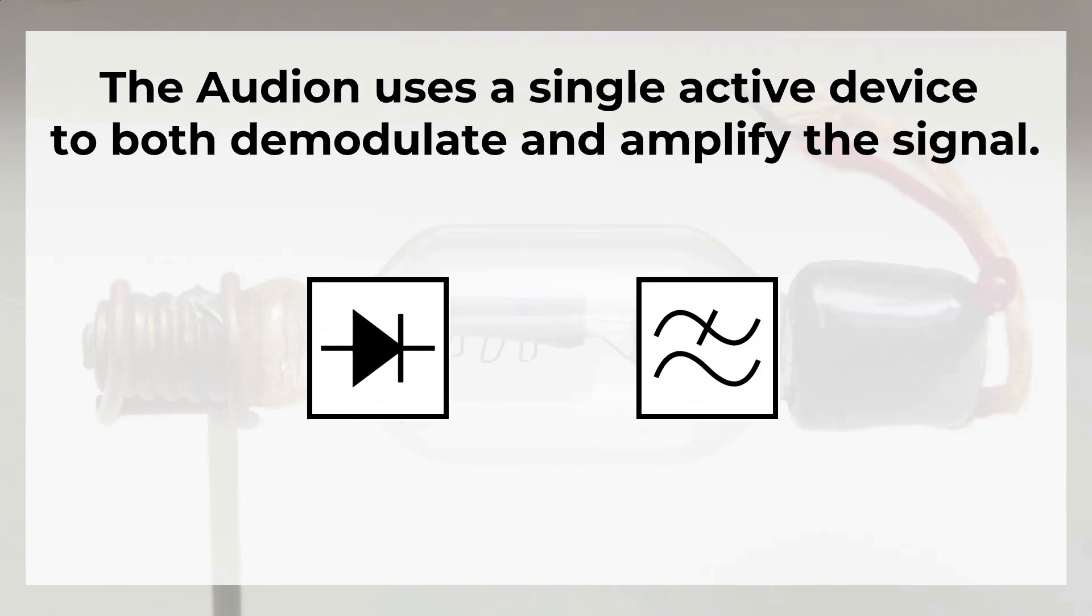Before we explain what an Audion is, let's first take a look at a simple diode detector. The input signal is an AM signal. If the input level is high enough, the diode can rectify the signal. After the low-pass filter we get the modulation signal, in other words the information.